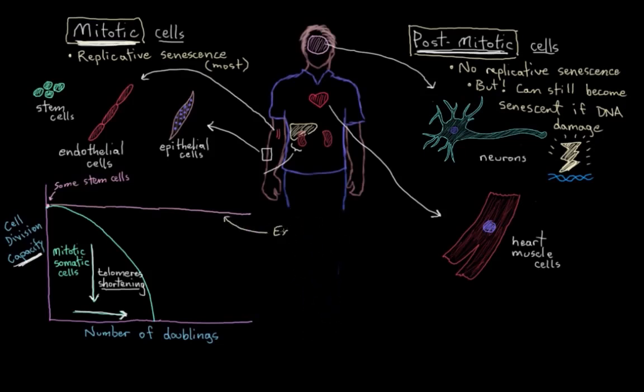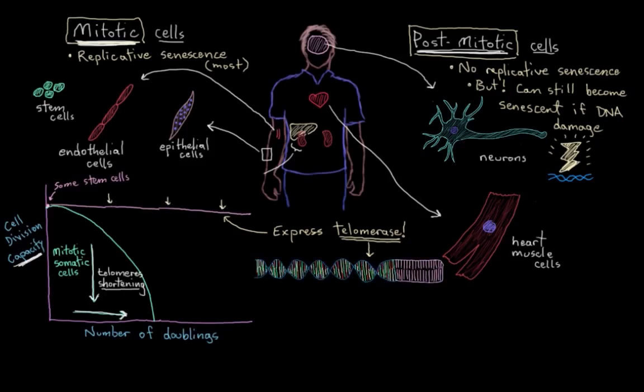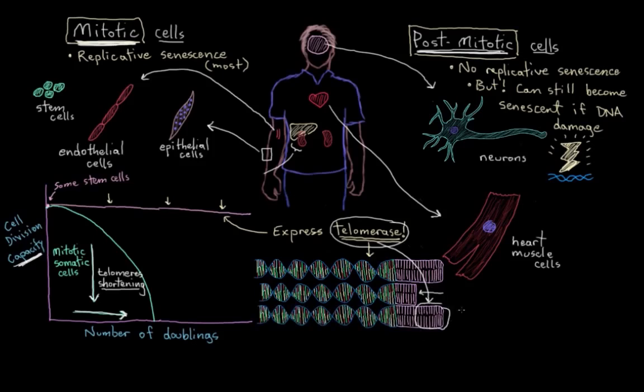It turns out that they express a special enzyme called telomerase. And what telomerase does is, every time one of these cells from our stem cell curve undergoes replication and loses a bit of telomere, telomerase, the enzyme, springs into action and adds back that little bit of telomere. So that means that these cells are never going to reach a Hayflick limit. They're just going to have the ability to replicate as many times as they want because they express telomerase.